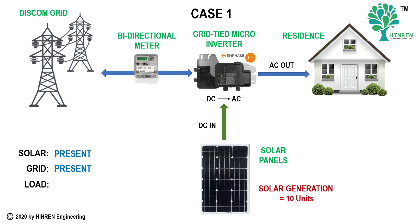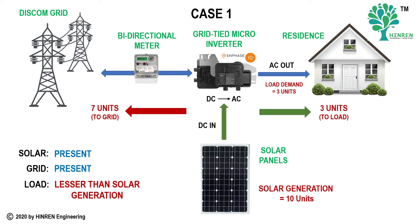In Case 1, say the solar is generating about 10 units of energy and the load demand is about 3 units. Since the load is less than solar generation, out of the 10 units generated, 3 units go to the load and the remaining 7 units get exported to the power utility grid. So no energy is taken from the grid, and 7 units are exported to it.